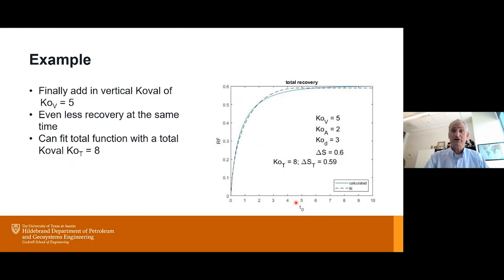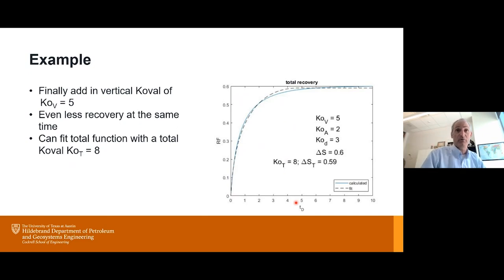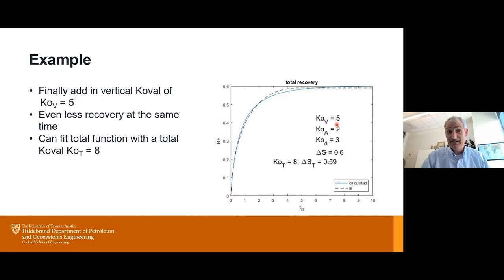Of course the numbers like 'I'll double the Koval factor' are guesses that need to be ground-truthed against actual data. If your company does gas flooding, you need to check this against previous gas floods you've done. Maybe it needs to be multiplied by four instead of two — that's something empirical data tells you. But presumably with enough data you can get good estimates, and the software runs very fast and robustly. This is a simple screening tool alongside or before doing full reservoir simulation.